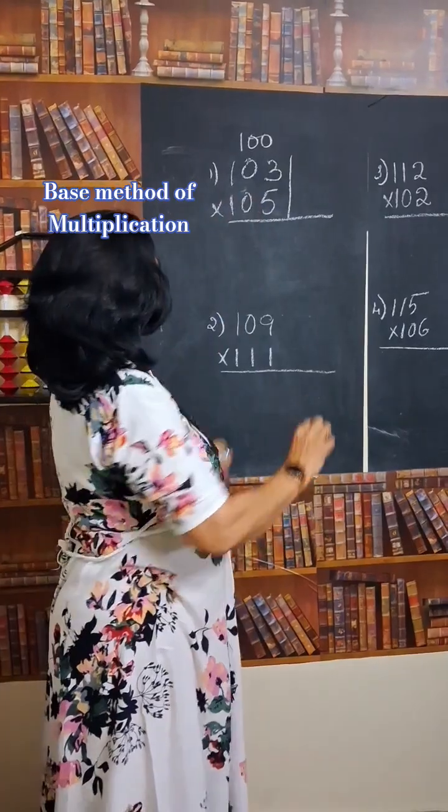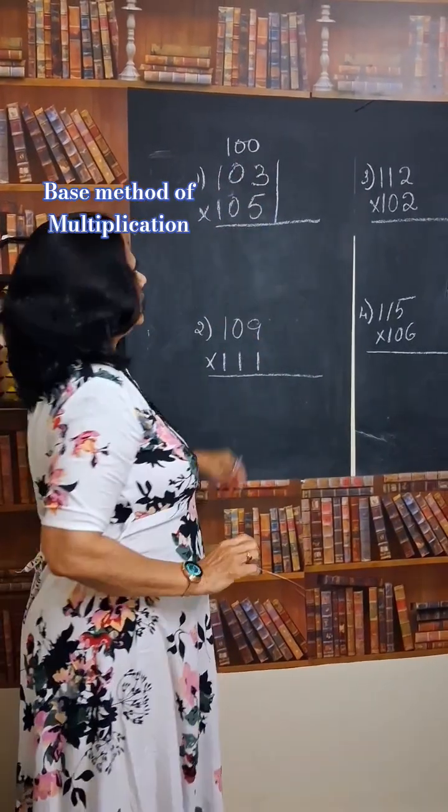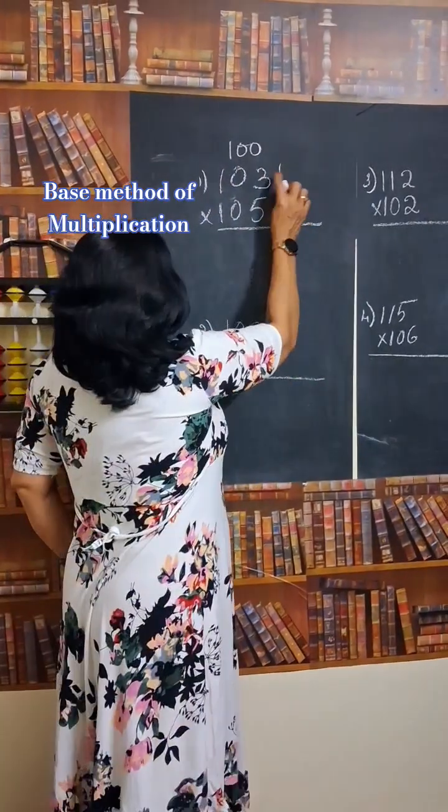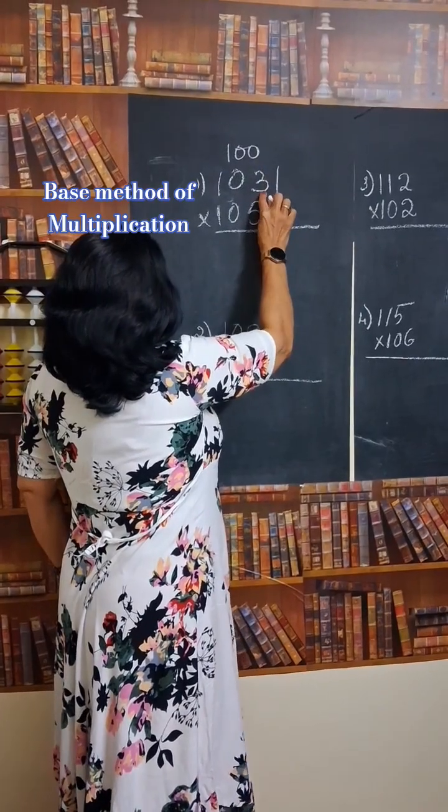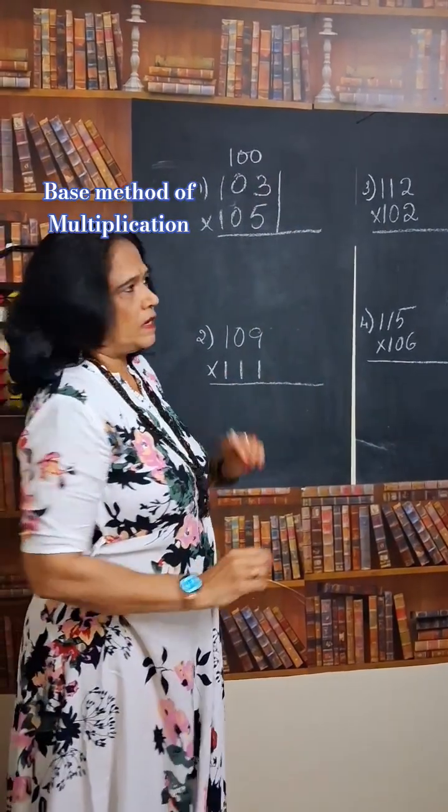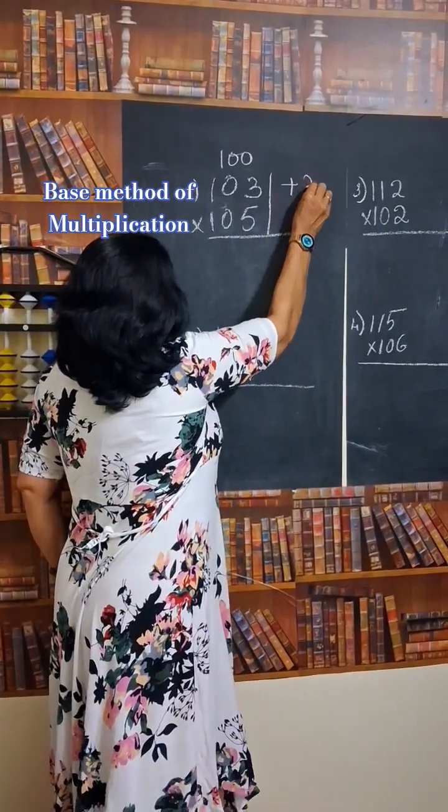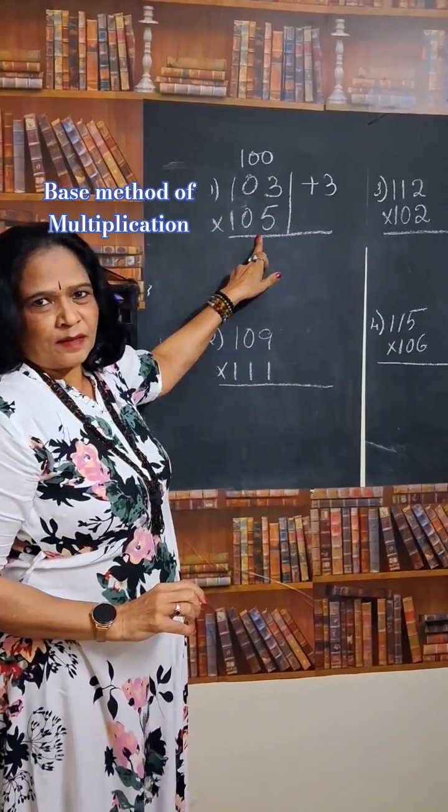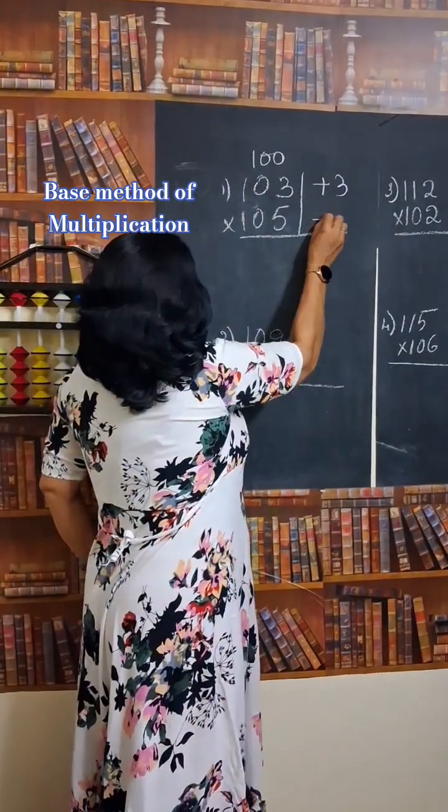This is above base number. Subtract the given number by base. Then it will be 103 minus 100. That will be 3. 105 minus 100. That will be 5.